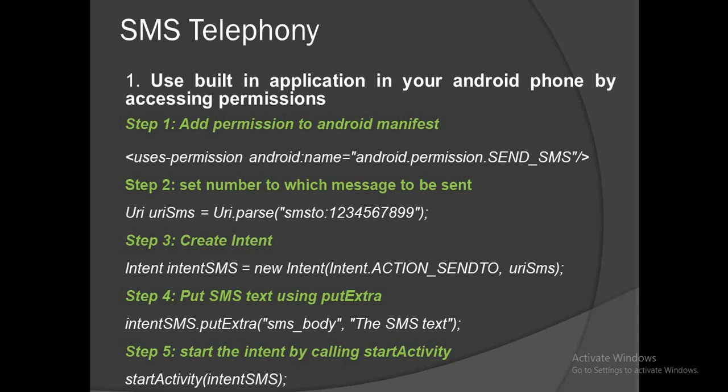Step two: set the number to which the message is to be sent. For that, use the built-in URI class: Uri type uri_sms equal to Uri.parse("smsto:") and give the number to which you want to send the SMS. Step three: create an intent for sending the message — Intent type intent_sms equal to new Intent(Intent.ACTION_SENDTO) and pass the URI object to it.